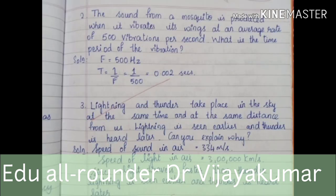The sound from a mosquito is produced when it vibrates its wings at an average rate of 500 vibrations per second. What is the time period of vibration? F = 500 Hz. T = 1 by f = 1 by 500 = 0.002 seconds.